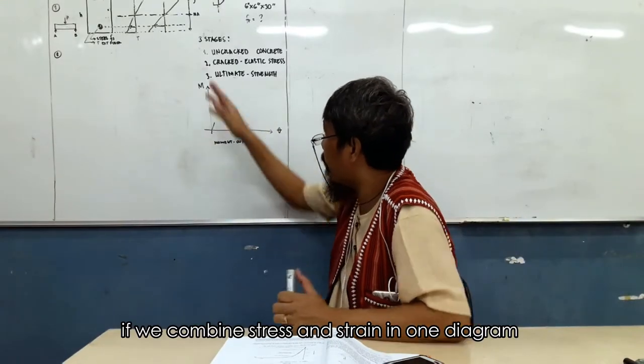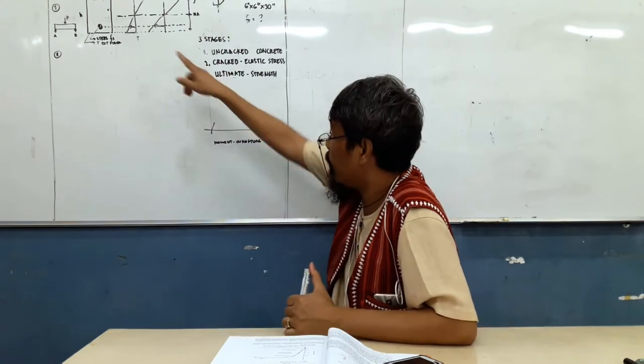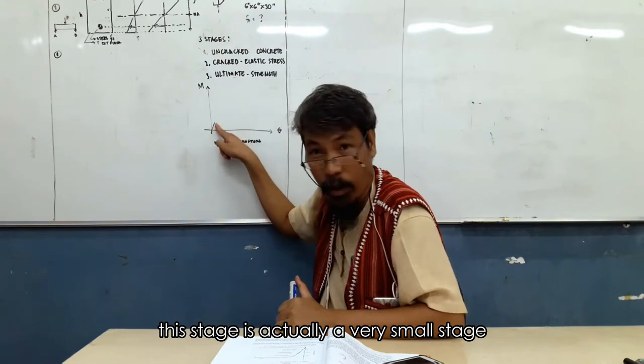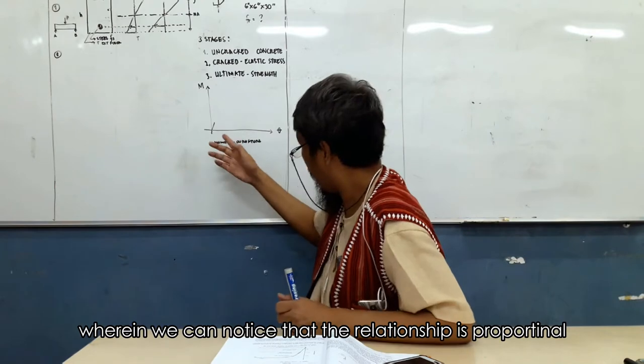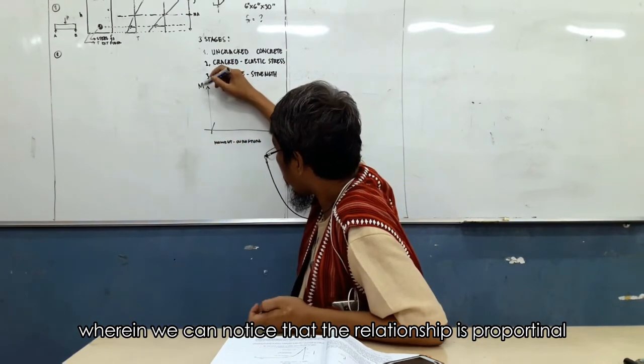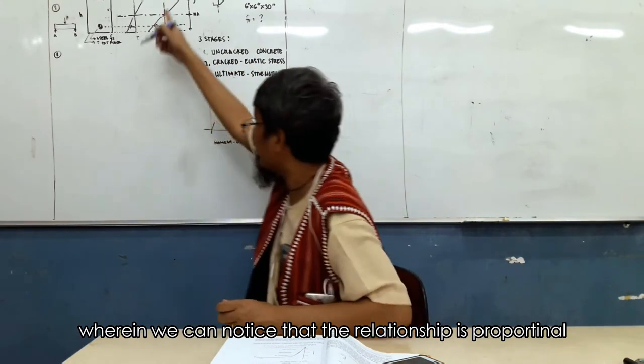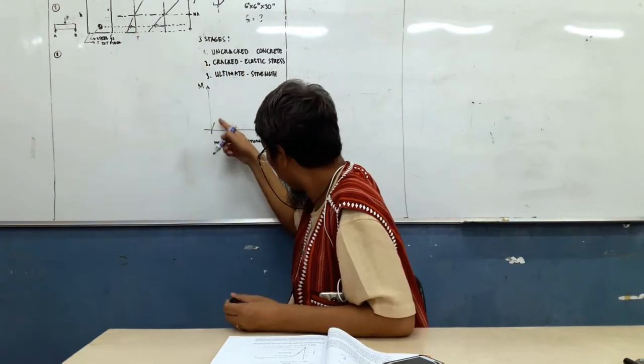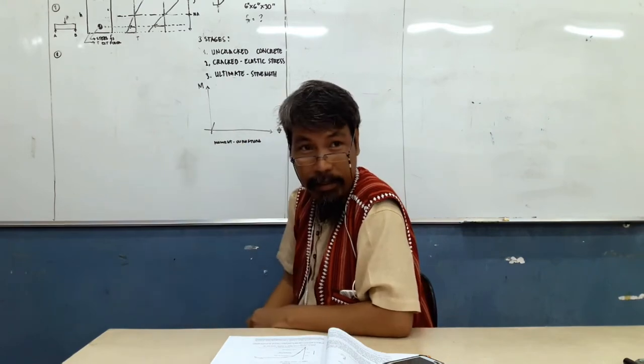If we combine stress and strain in one diagram, this stage is actually a very small stage. When we begin to notice that the relationship is proportional, straight line, they are proportional like this, straight line.